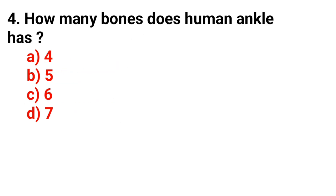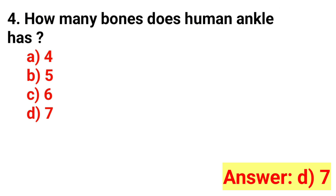Question number 4. How many bones does the human ankle have? The correct answer is option D: 7.